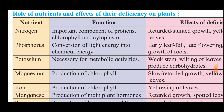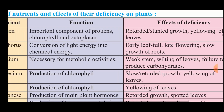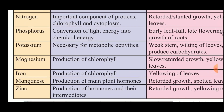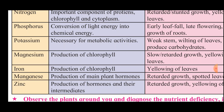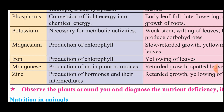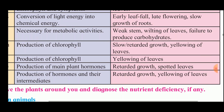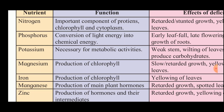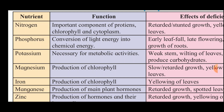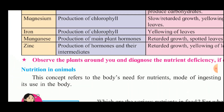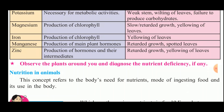Potassium is necessary for metabolic activities — its deficiency causes weak stems, wilting of leaves, and failure to produce carbohydrates. Magnesium is needed for production of chlorophyll — deficiency causes stunted growth and yellowing of leaves. Iron and manganese are involved in chlorophyll production and production of plant hormones respectively — their deficiencies cause yellowing of leaves, retarded growth, and spotted leaves. All these nutrients should be present in the soil; otherwise the deficiency effects described in the table can be observed in plants.